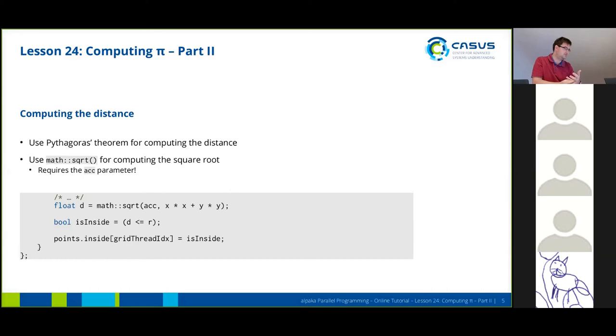Afterwards we can determine with a simple equation if our point is inside the circle or not. If it is inside, we set this value to true and write it back to our buffer which contains the booleans for each point.